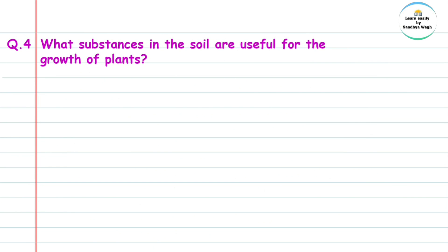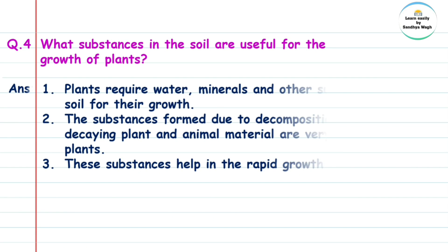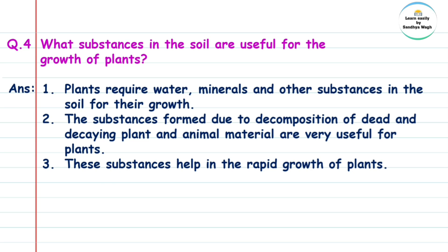Question 4: What substances in the soil are useful for the growth of plants? Answer: Plants require water, minerals, and other substances in the soil for their growth. The substances formed due to decomposition of dead and decaying plant and animal material are very useful for plants. These substances help in the rapid growth of plants.